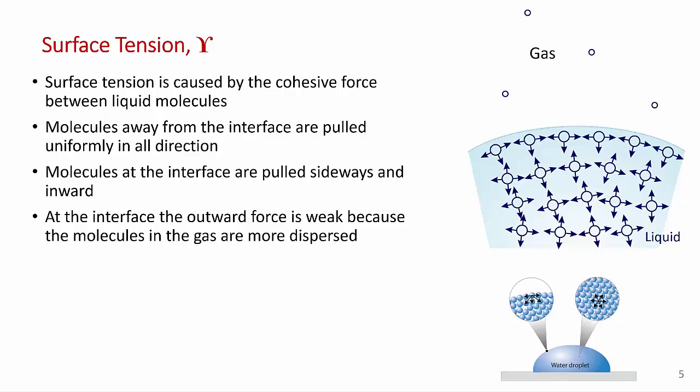As I've mentioned, surface tension is caused by the cohesive force between adjacent liquid molecules. I've drawn a sketch of the surface of a liquid droplet here. Molecules that are in the interior of the droplet, so well away from the interface, are pulled more or less uniformly in all directions by the surrounding molecules. They're attracted to their neighbors in all directions. But if we look at molecules at the surface, molecules that are right at the surface are pulled sideways and inward. There's not a lot of outward force because molecules of the gas are much farther apart. They're widely dispersed.